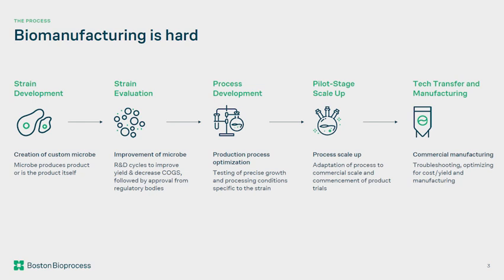These are the five steps you would have to go through to eventually get to a scalable and economical manufacturer. You start from strand development, which is at a tiny scale — less than your coffee mug size, basically. Once you have a strand that's engineered or has some metabolics built in, you move into strand evaluation, where you're trying to see if the strand is doing the job you want it to do.